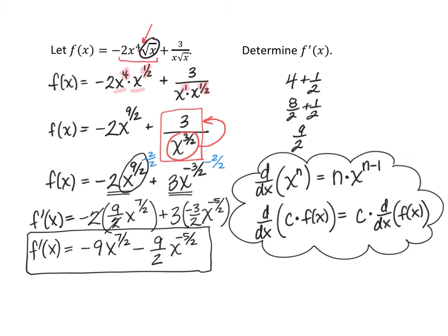However, some instructors and computer programs don't want negative exponents. Let's discuss equivalent answers. We could write: -9x^(7/2) - 9/(2x^(5/2)). This moves the negative exponent to the denominator.